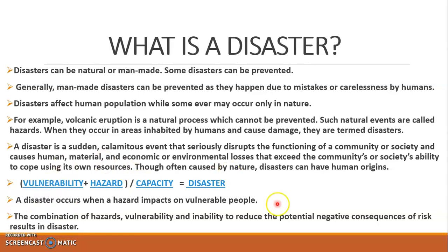Though often caused by nature, disasters can have human origins. Even if some disasters occur naturally, they may indirectly have a human origin or background. Because of large populations, we can see an imbalance in the ecosystem. When there is an imbalance in the ecosystem, it indirectly affects the environment, leading to floods and tsunami waves — all because of human interventions in natural processes.